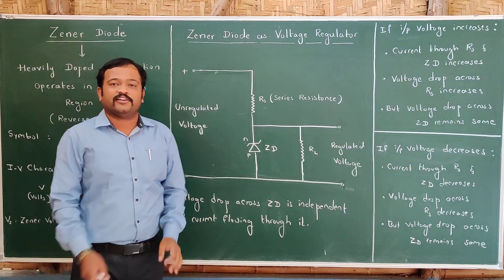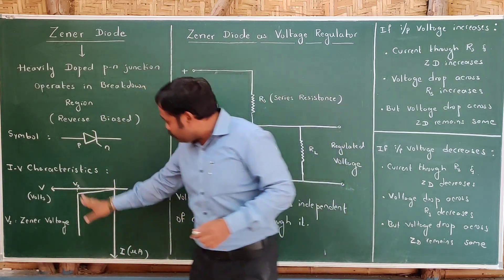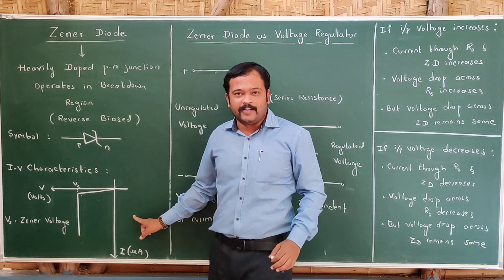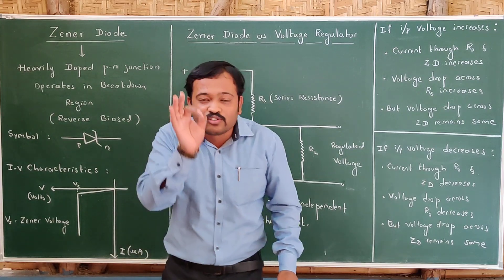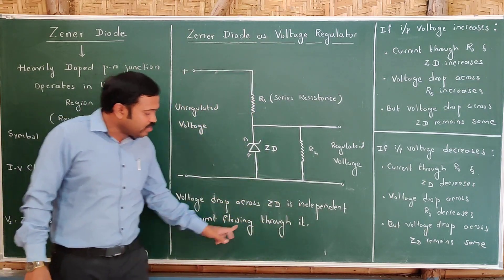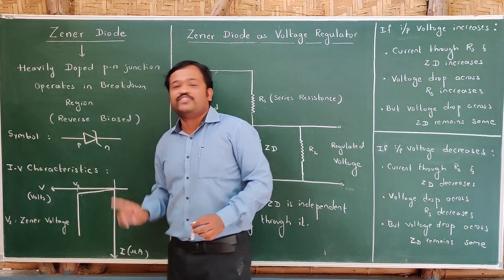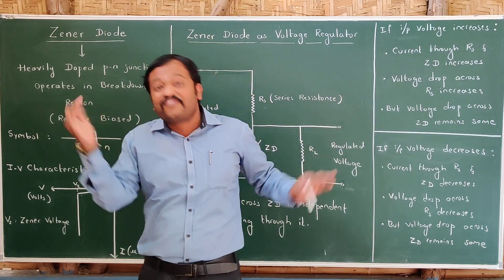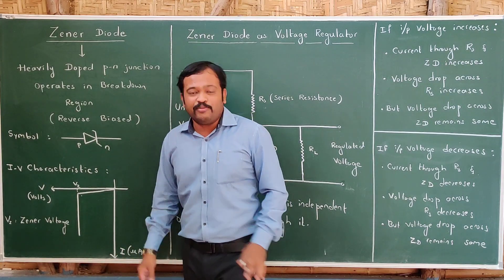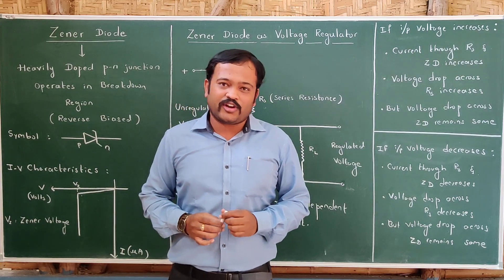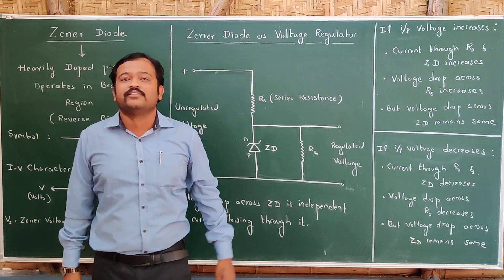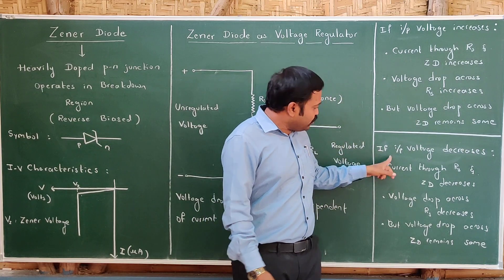The Zener diode is used as a voltage regulator because of its special property: the Zener voltage VZ remains constant — the voltage drop across the Zener diode is independent of the current flowing through it. Even though current is increasing, voltage remains the same. In a normal wire, if current increases, voltage increases — but in a Zener diode, if the current increases, voltage remains the same. Because of this property, the Zener diode is used as a voltage regulator. Let us consider two cases: Case 1 — input voltage increases; Case 2 — input voltage decreases.